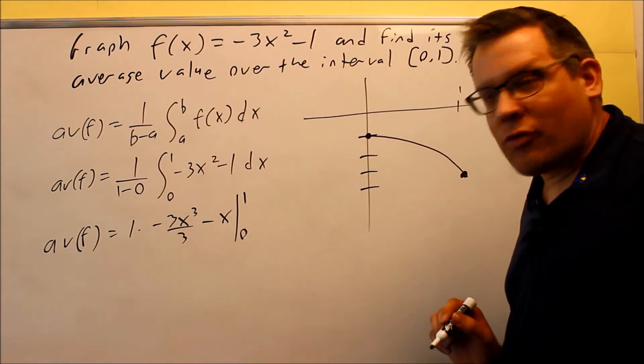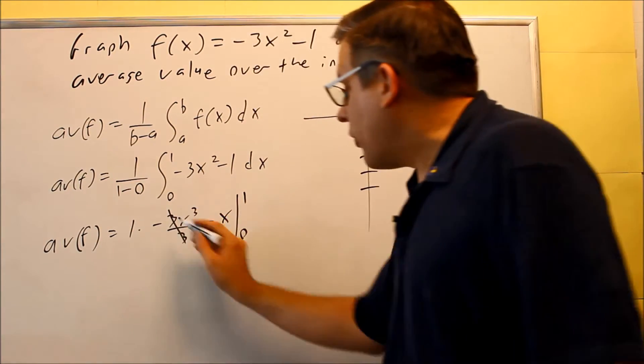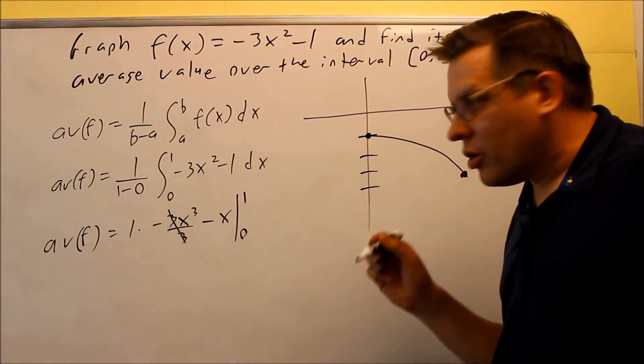Now what I can do here is I can do a simplifying step. The 3's I can cancel. I end up with negative x cubed minus x, so now I'm just ready to put the numbers in.